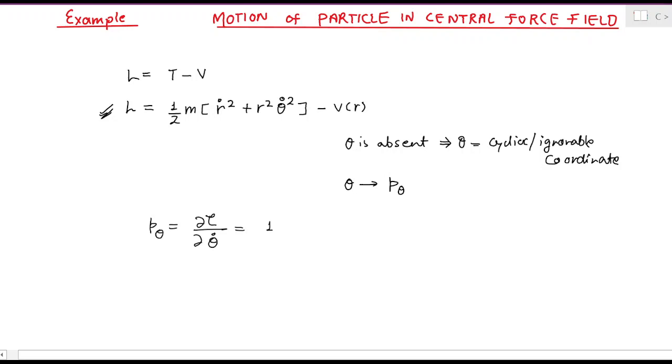You will get (1/2)mr²(2θ̇), and the two and two will cancel out, so you will be left with mr²θ̇. What do you know about this?